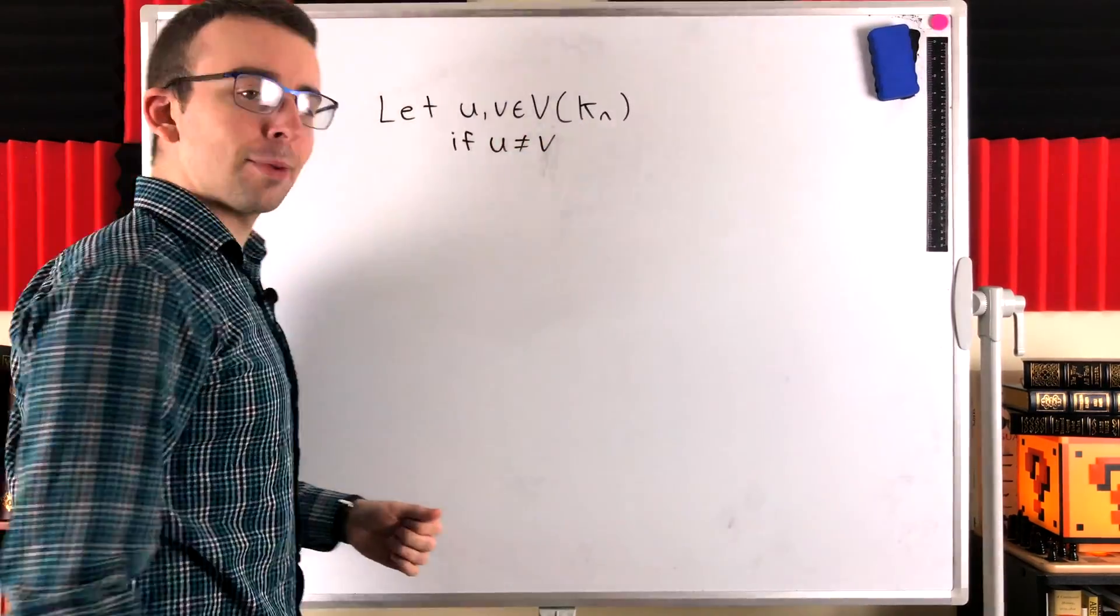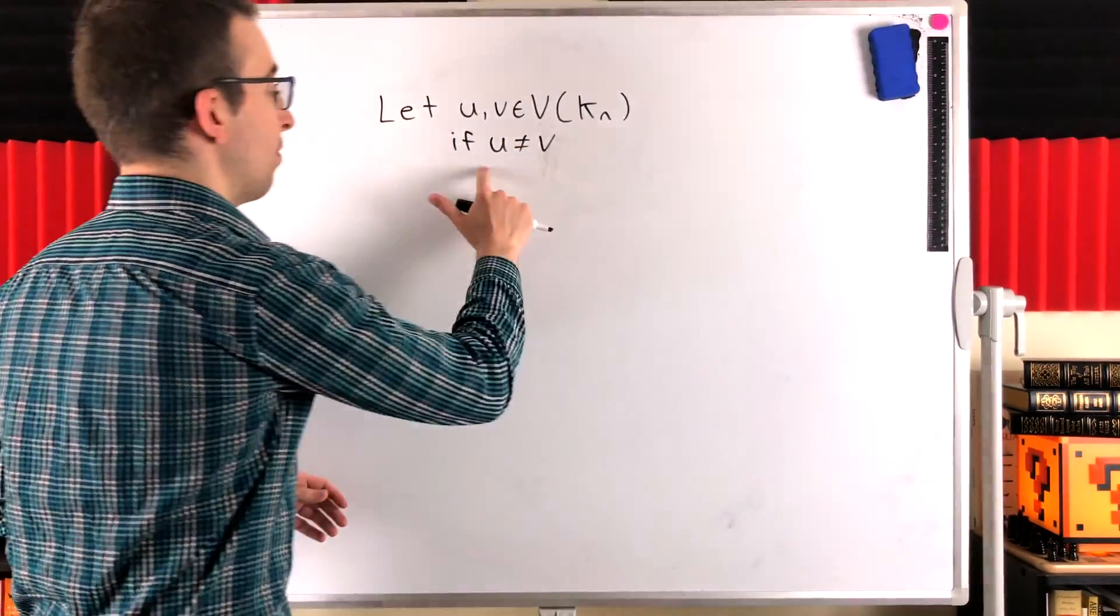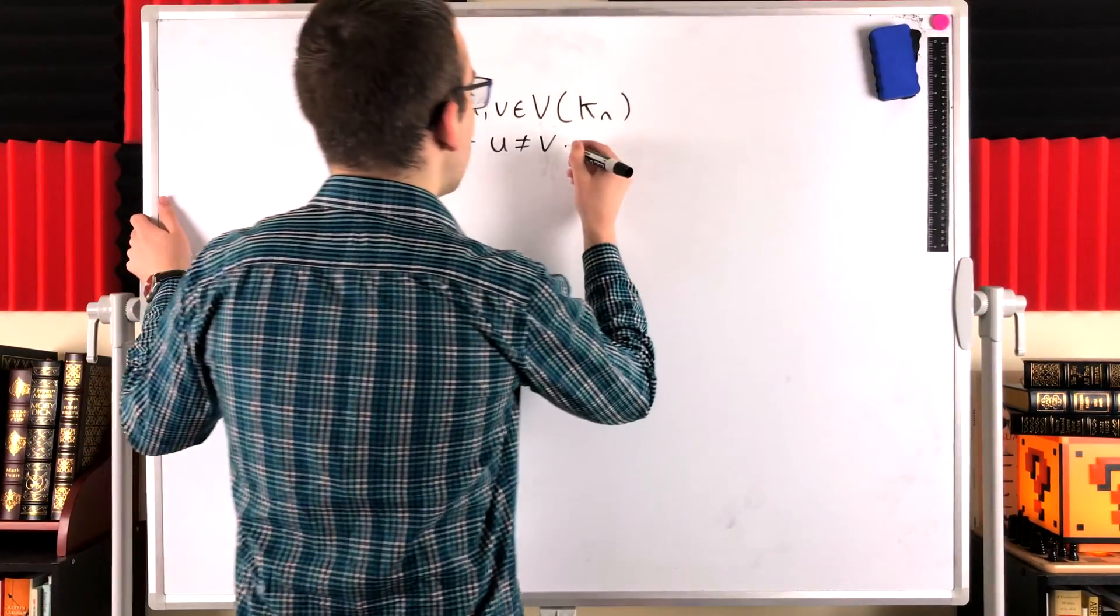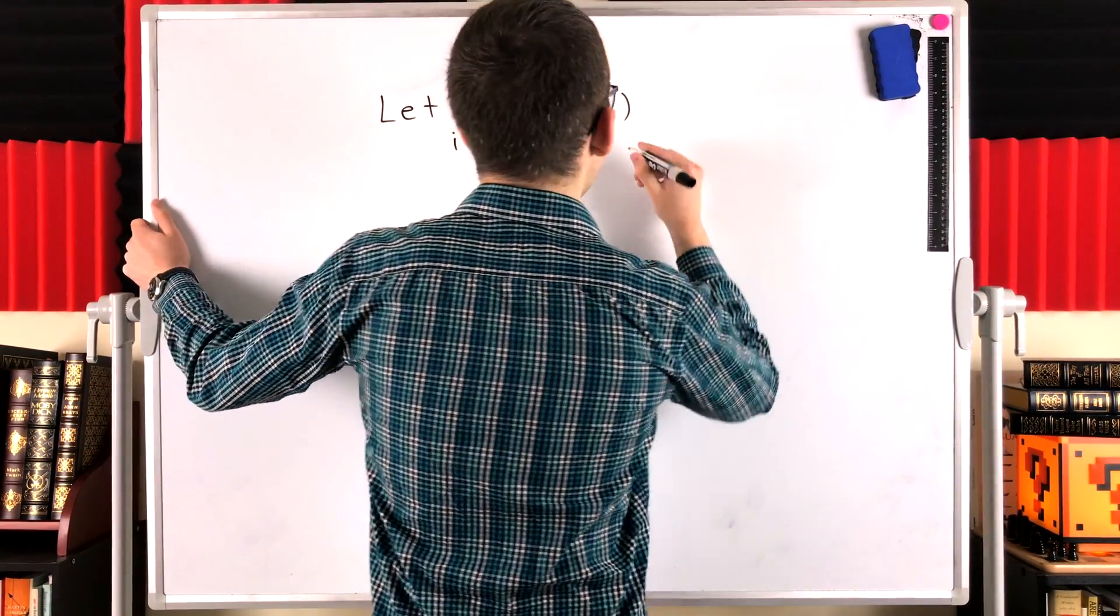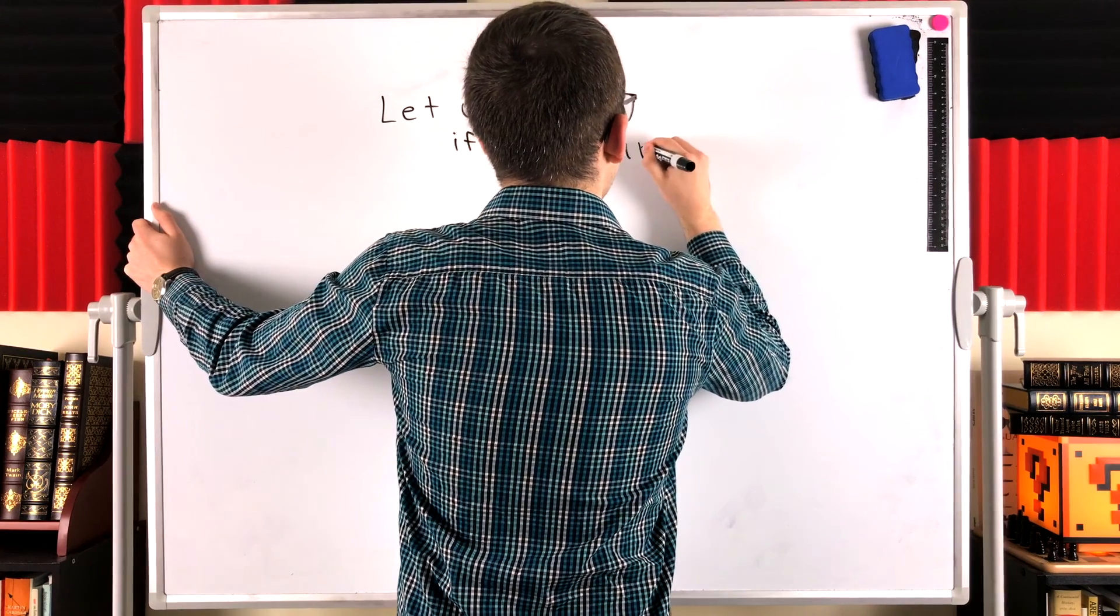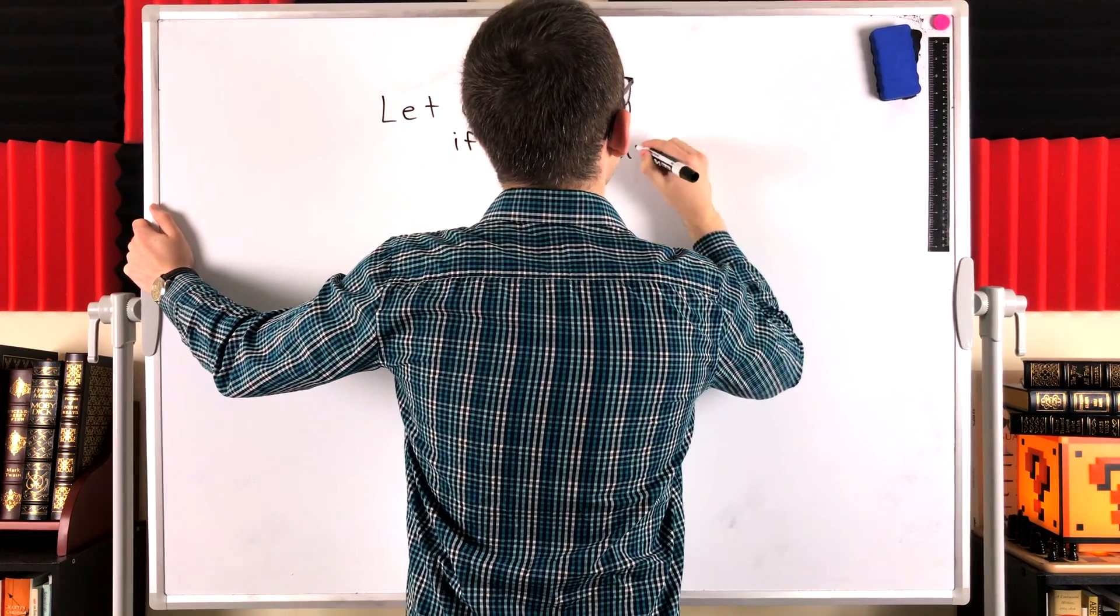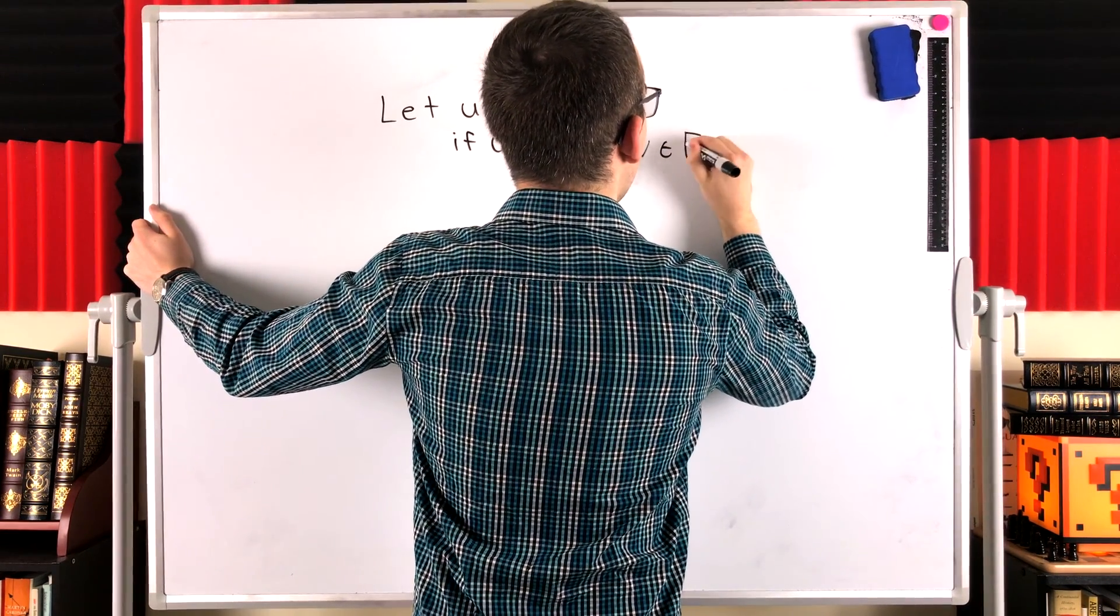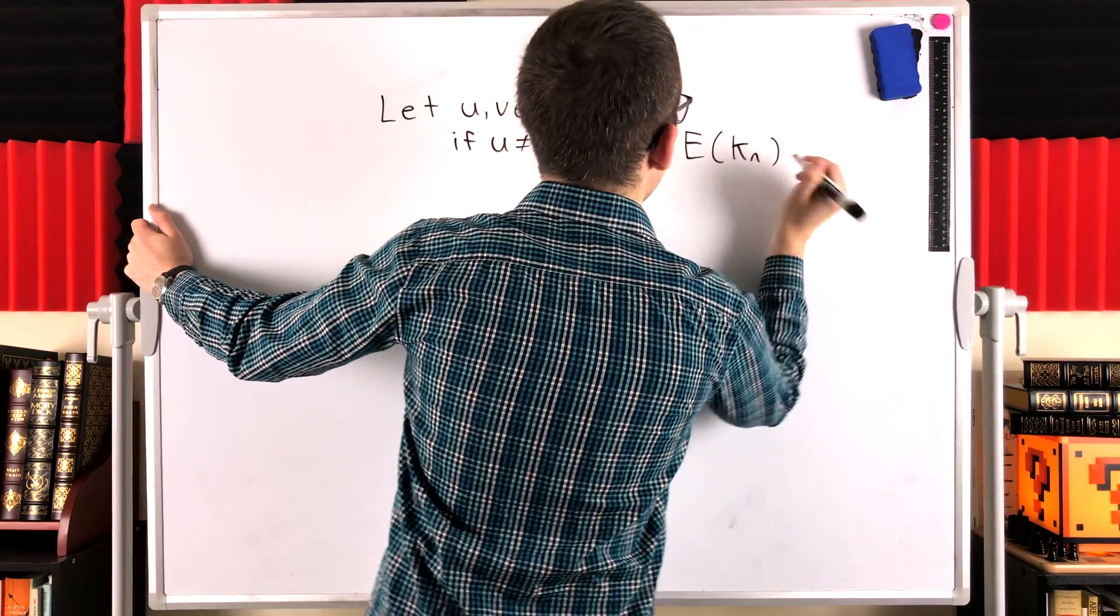Well, since they're in a complete graph, by definition, if they're distinct vertices, they've got to be adjacent. So if u is not equal to v, then u and v are adjacent, which we can write as uv is an element of the edge set of our complete graph KN.